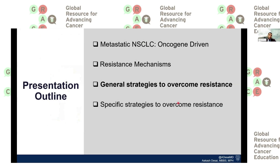I'm going to focus first on the general strategies on how we overcome resistance in certain pathways. My talk will mostly be focused on EGFR and ALK because that's where we have the majority of the data currently, but I will also try to cover some of the other, rarer mutations in the last few slides.